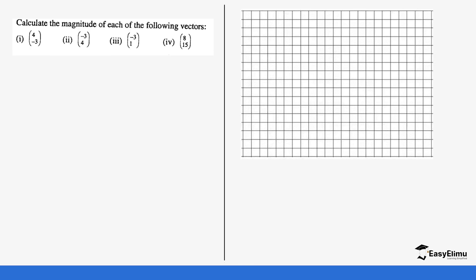Let's look at the magnitude of the following vectors using a graph. The first vector is (4, -3): you move four steps on the x-axis — one, two, three, four — and then three steps downwards on the y-axis — one, two, three — because moving in the negative direction on the y-axis gives a negative value. Joining these points forms the vector.